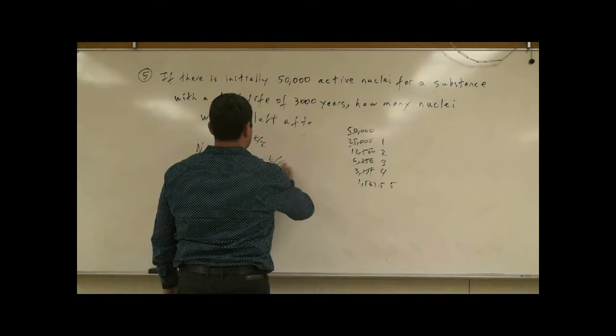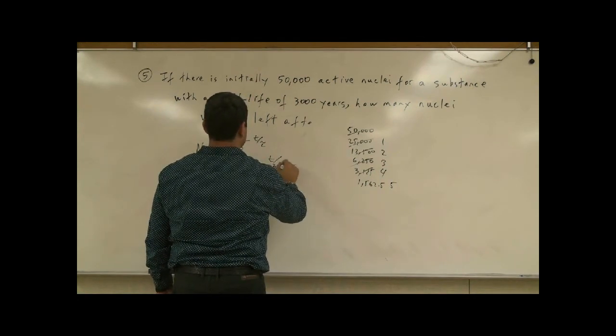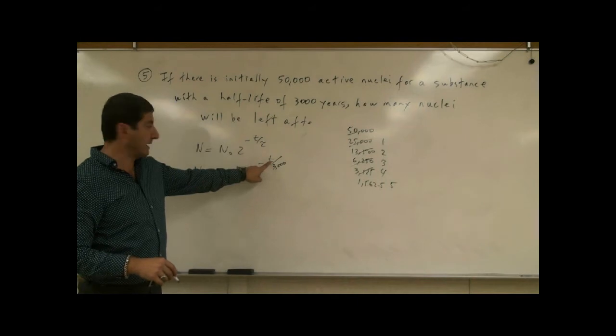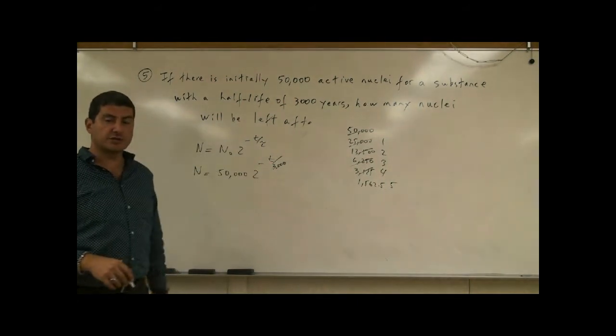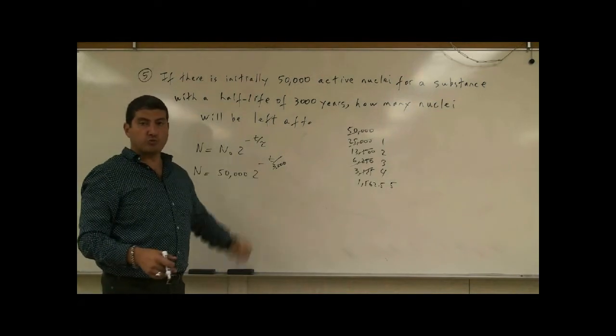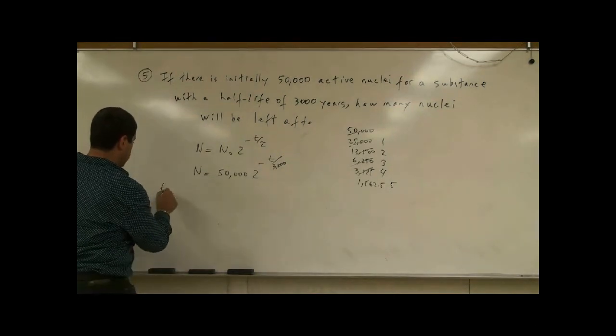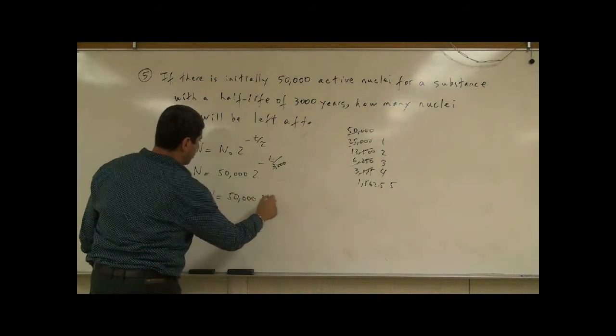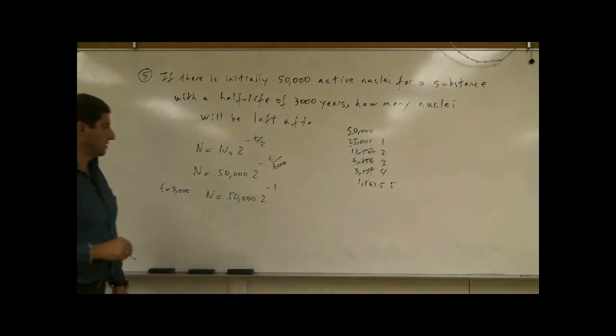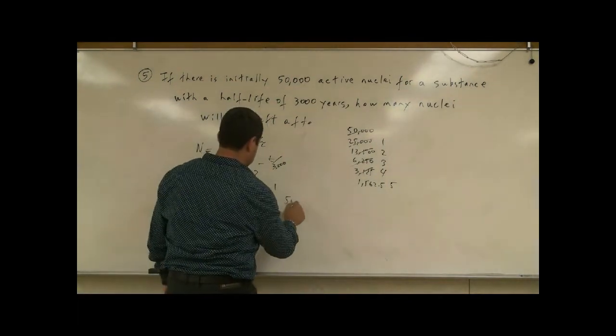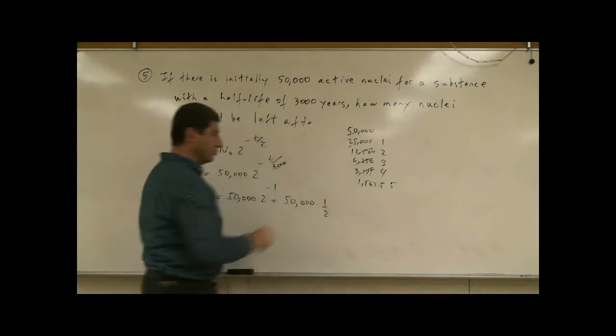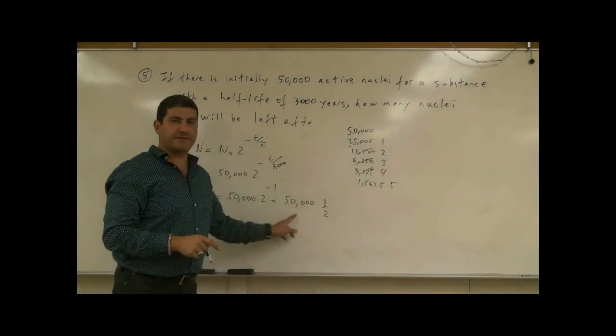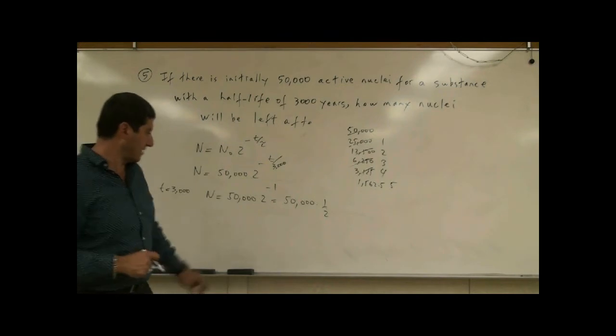So if the time elapsed is 3,000, what's going to happen? 3,000 over 3,000 is going to be 1. 2 to the minus 1, what's that? If T is 3,000, you're going to have N is going to be 50,000 times 2 to the minus 1. 2 to the minus 1 is what? That's the same as 1 over 2. So the equation predicts that after one half-life, you will have half of 50,000, which is 25,000.